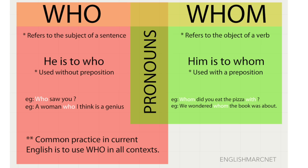The first example for whom is: 'Whom did you eat the pizza with?' As you can see, we have a preposition here — 'with' — and this tells us that we are asking for the object of the verb.